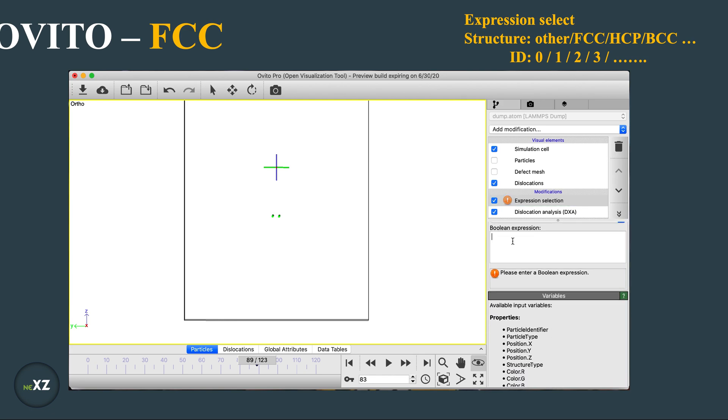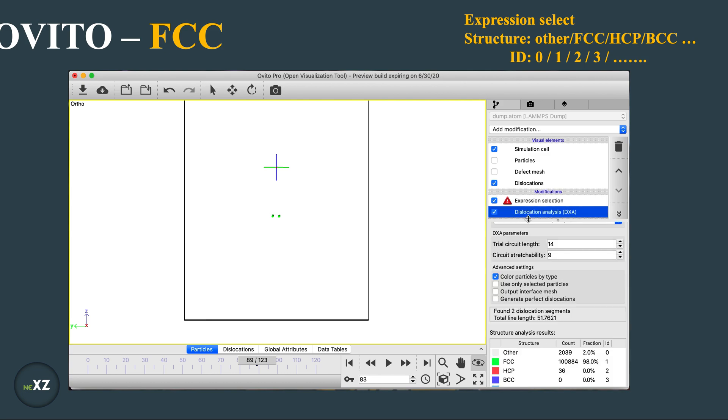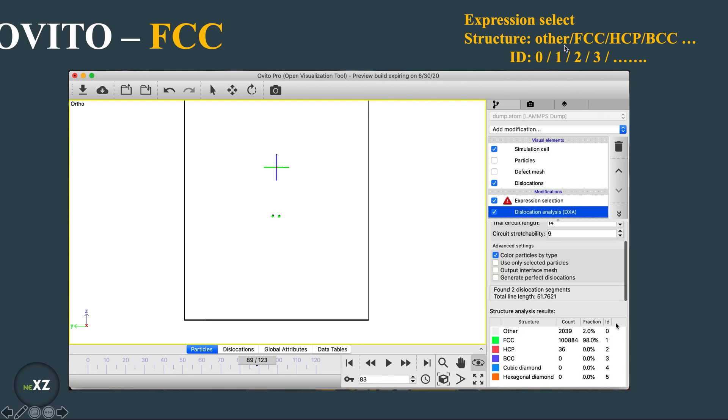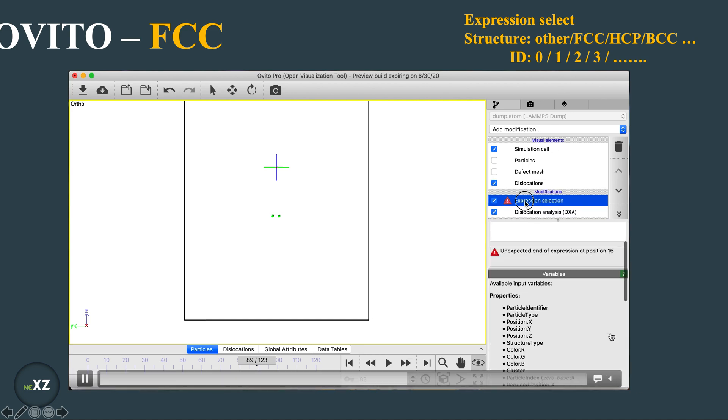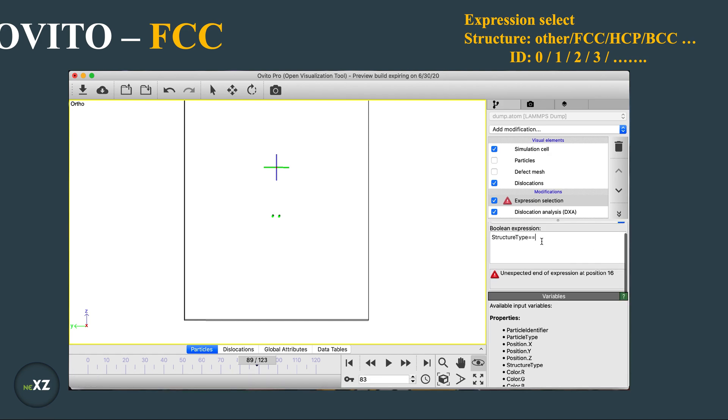I select structure type equals to 0 which is for the other type, other. And you can see here the IDs are given, the other is 0 and FCC is 1. I give OR, so this is the piping, I give OR and structure type equals to equals to 1.